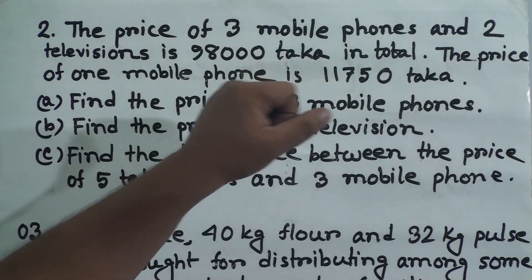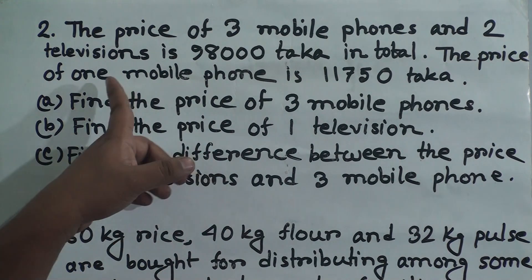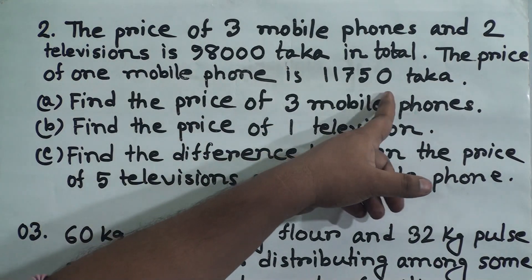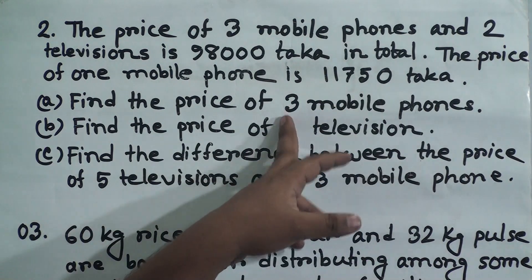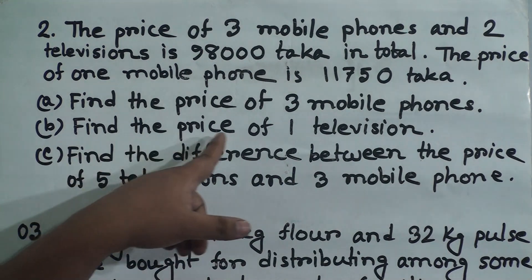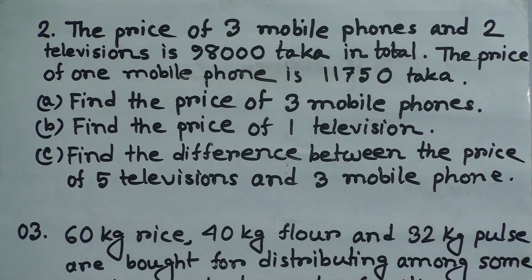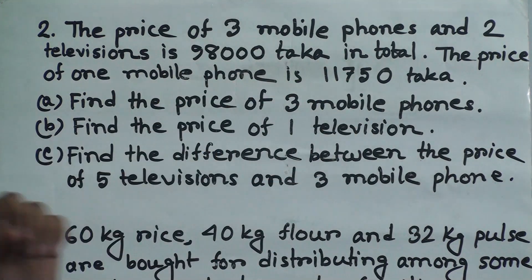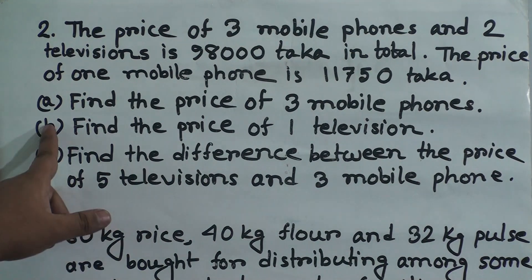The price of three mobile phones and two televisions is 98,000 taka in total. The price of one mobile phone is 11,750 taka. (a) Find the price of three mobile phones: multiply 11,750 by 3 to get the answer. (b) Find the price of one television: subtract the price of three mobile phones from 98,000 to get the price of two televisions, then divide by 2.